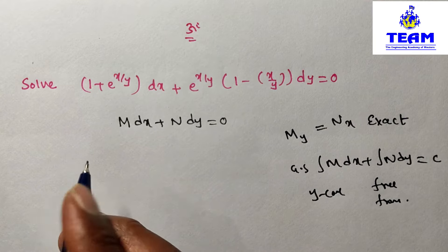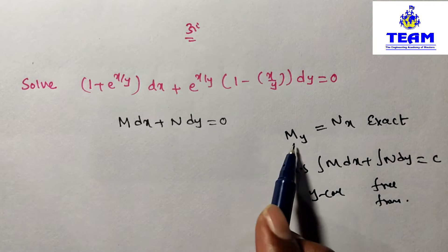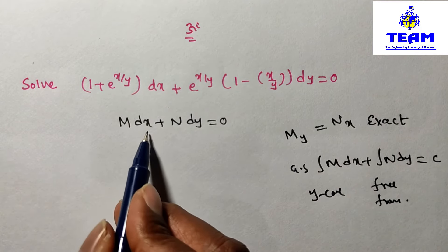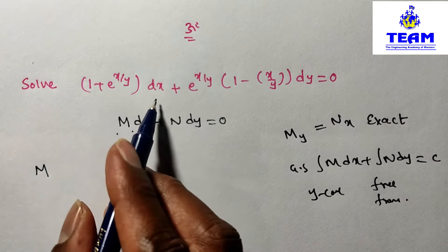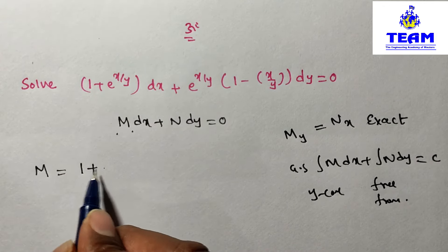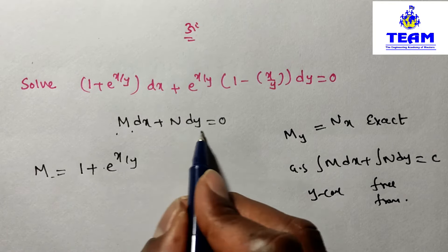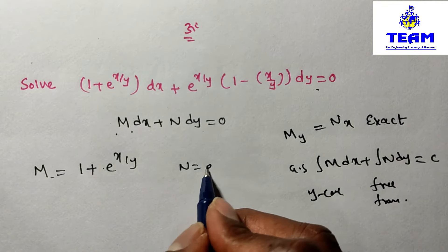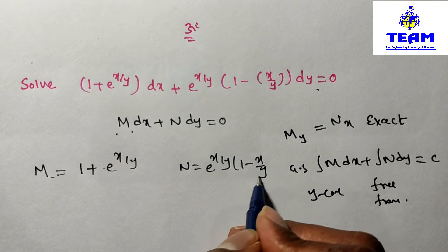First we verify exactness by computing ∂M/∂y and ∂N/∂x. From the given problem, M is 1 + e^(x/y) (the coefficient of dx), and N is e^(x/y) · (1 - x/y) (the coefficient of dy).